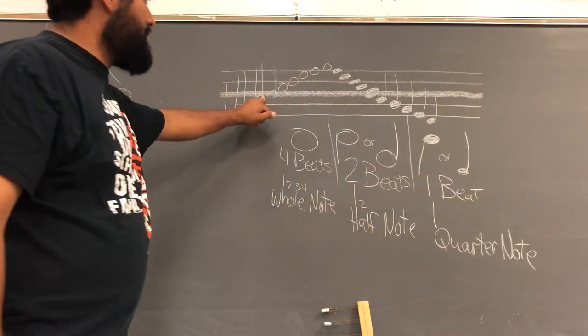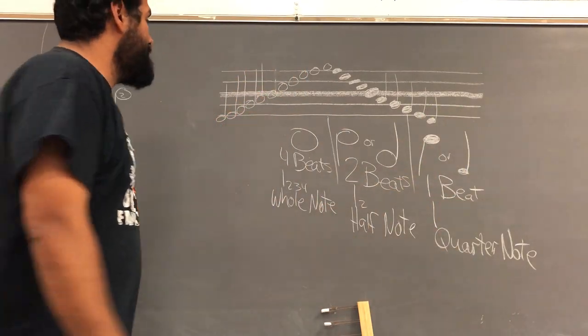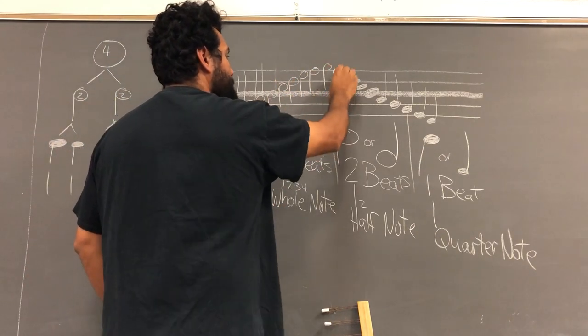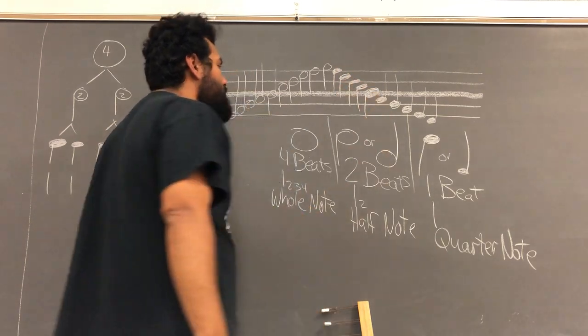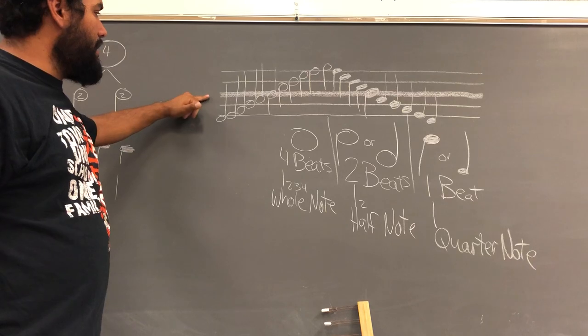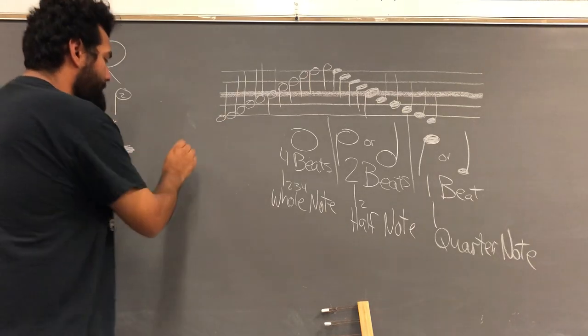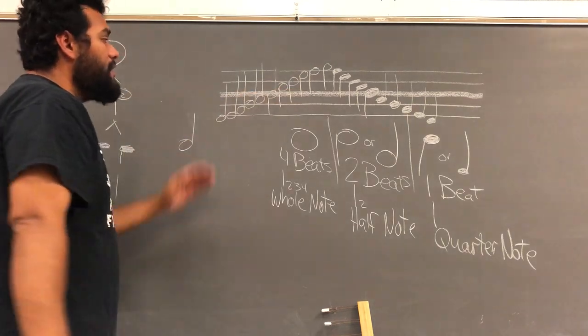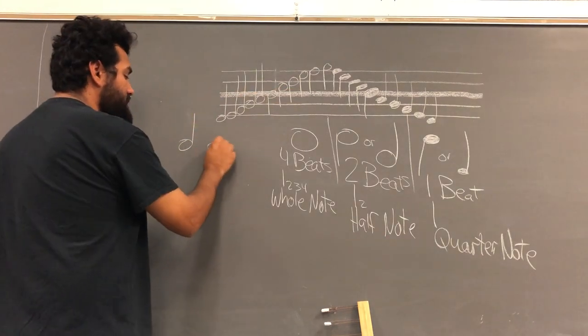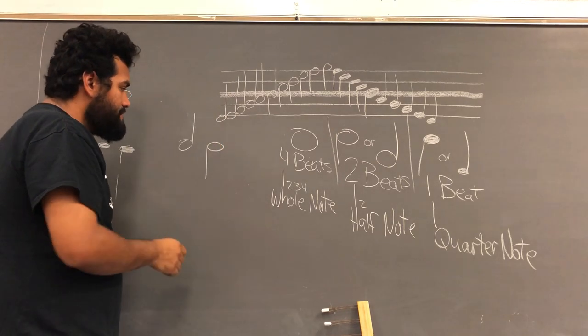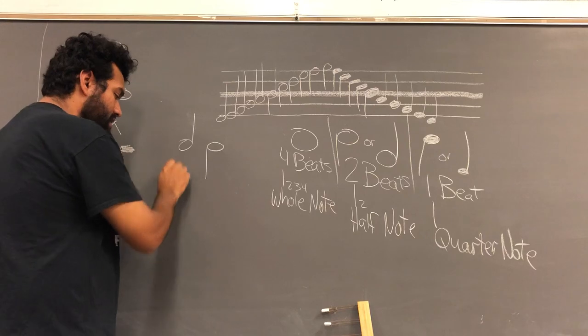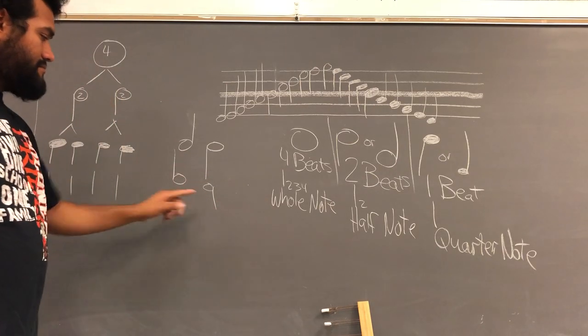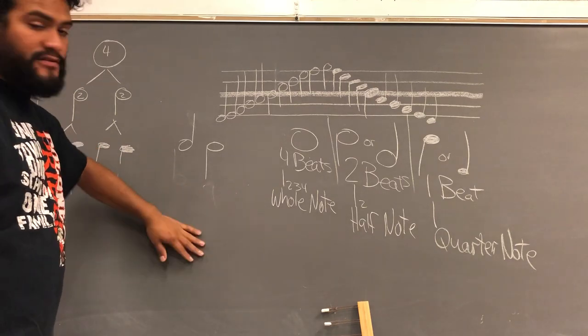Now, if the note is on the third line or above, the stem goes down. So again, if the notes are below the third line, the stems are going up. If the notes are above the third line, the stems go down. So that's how it's supposed to be drawn. You will never see something like this or like this. That doesn't make any sense. So never have that down.